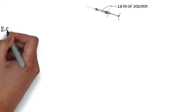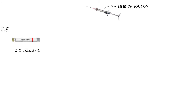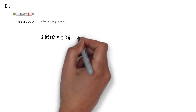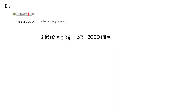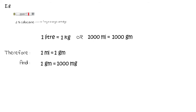Let's take an example of a normal cartridge containing 2% lidocaine, and find out how many milligrams of lidocaine are present in a cartridge that has approximately 1.8 ml of total solution. It is well established that 1 liter of a liquid equals 1 kg of mass, or in other words, 1000 ml equals 1000 grams, therefore 1 ml equals 1 gram. And since 1 gram contains 1000 mg, by equivalence we have 1 ml equal to 1000 mg.